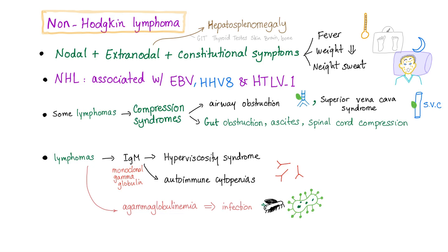Some lymphomas will secrete IgM, leading to hyperviscosity syndrome, because IgM is the largest immunoglobulin, as well as autoimmune cytopenia, such as autoimmune hemolytic anemia. Others will lead to, on the opposite, agammaglobulinemia — low gamma-globulins, leading to infections.